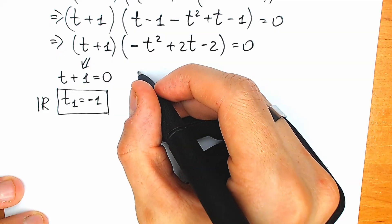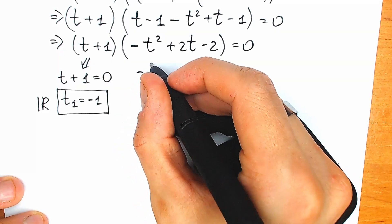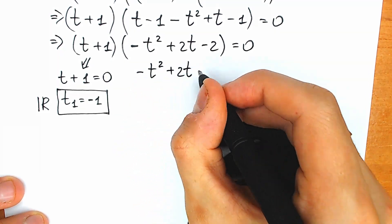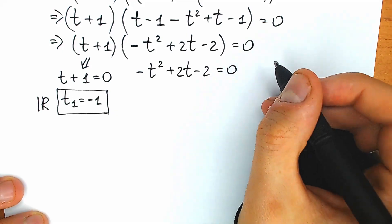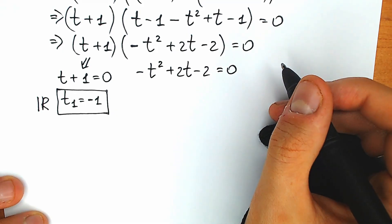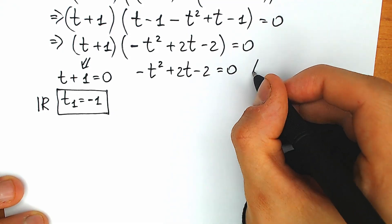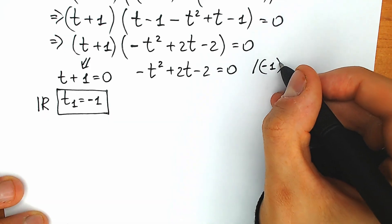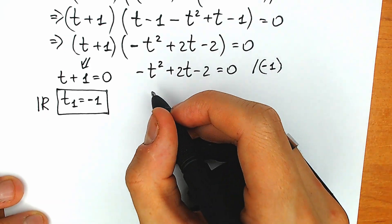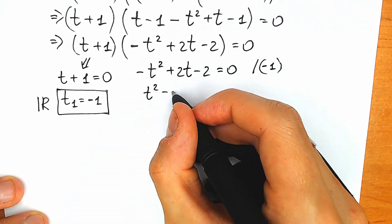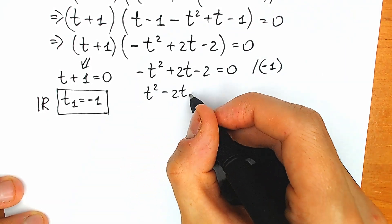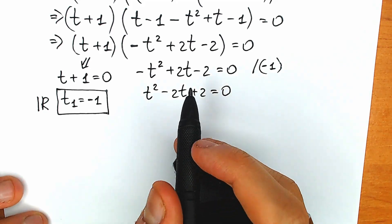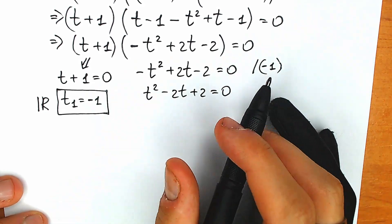For the other factor, we have minus t squared plus 2t minus 2 equals zero. Let's multiply it by minus 1. As a result we have a classic order of signs: t squared minus 2t plus 2 equals zero. We have a classic quadratic equation.